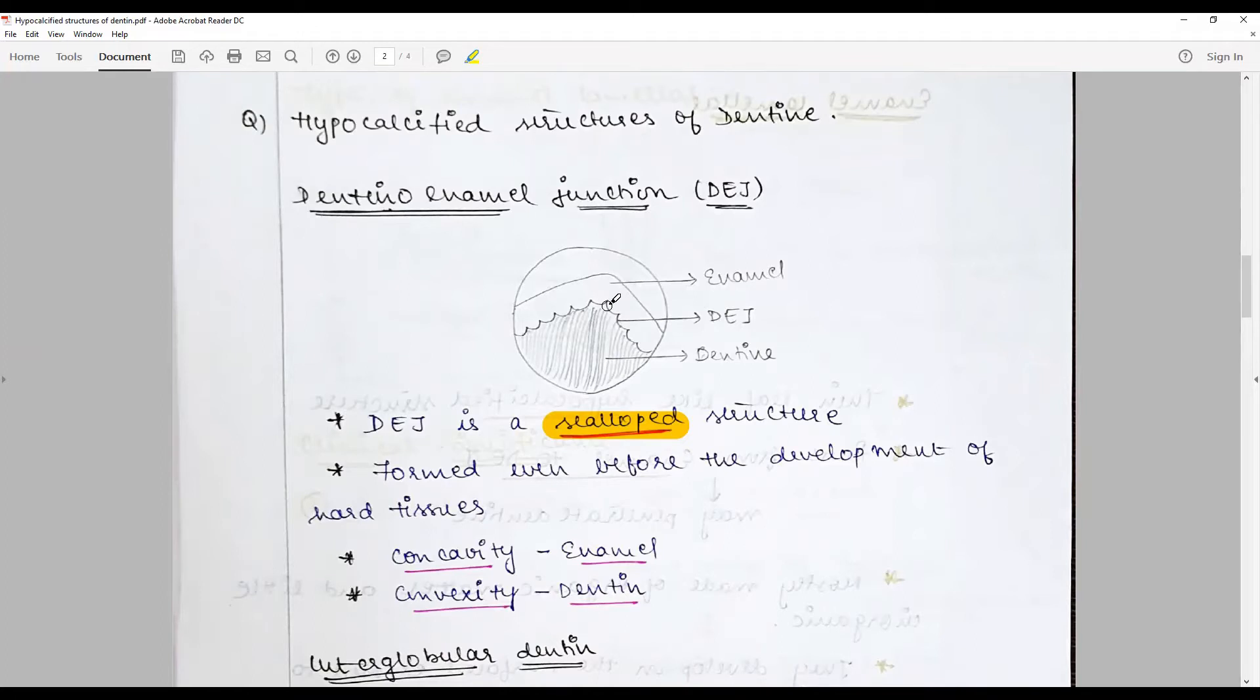Because of the difference in the calcification process, this area inherently is where the first formed enamel and the first formed dentin are located - that is the mantle dentin and the first ever formed enamels. Hence this area inherently has less calcification than the rest of the area.